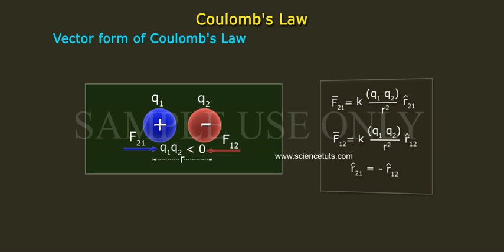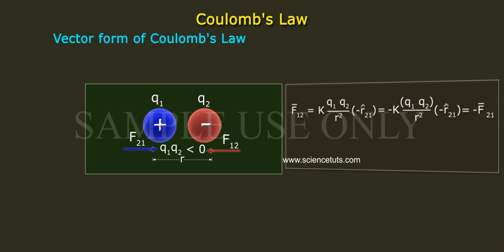But we know that r21 cap is equal to minus r12 cap. Therefore, F12 bar is equal to K into Q1 Q2 by r square of minus r21 cap, which is equal to minus K Q1 Q2 r square r21 cap, which is equal to minus F21 bar. That is, F12 bar is equal to minus F21 bar.